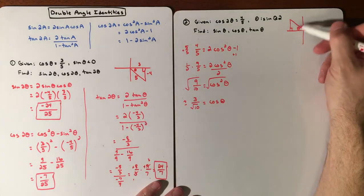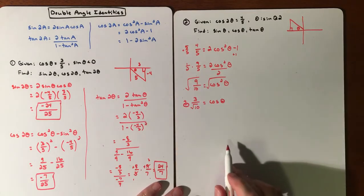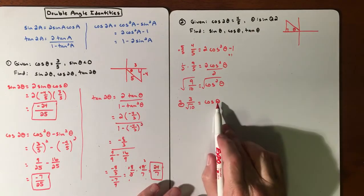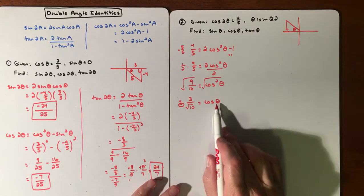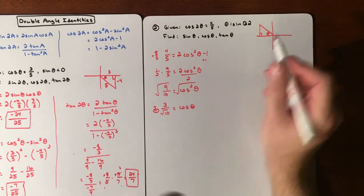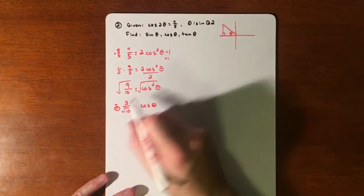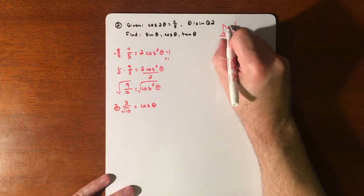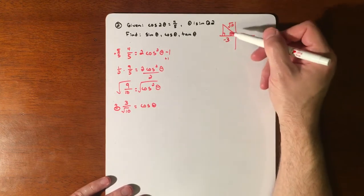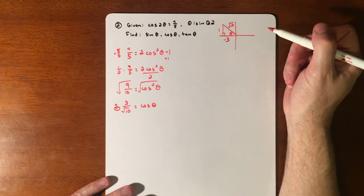The tricky part is, should this be positive or negative? Well, it's cosine, and cosine in quadrant 2 is going to be negative. So we're looking at -3/√10. Because θ is the basic angle that we're looking to find, not the double angle, I can now fill in my values. Cosine is adjacent over hypotenuse, so that's -3 over √10. And if you do Pythagorean theorem, that's going to get us a 1 for the opposite side because it's going to be 10 minus 9.